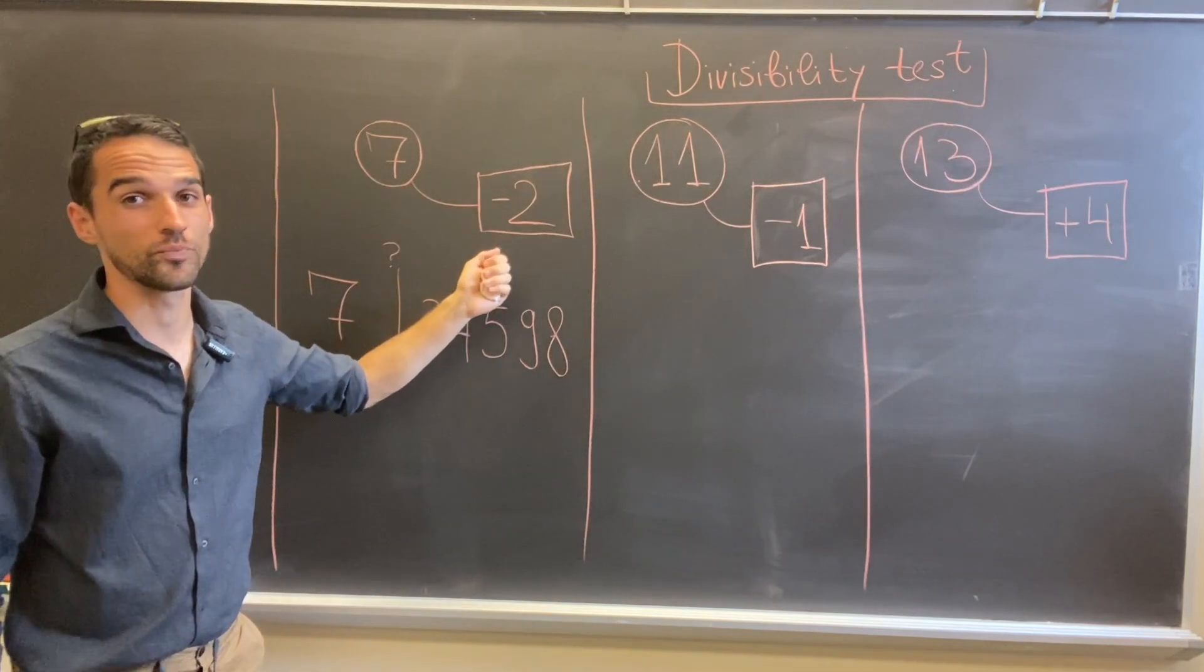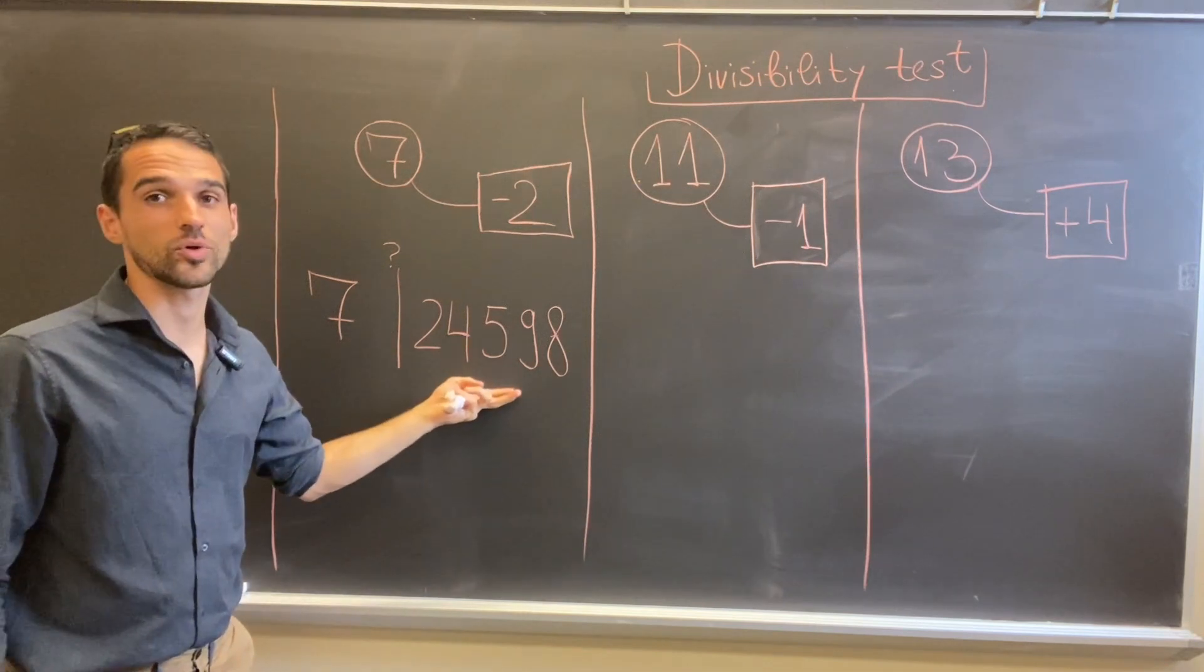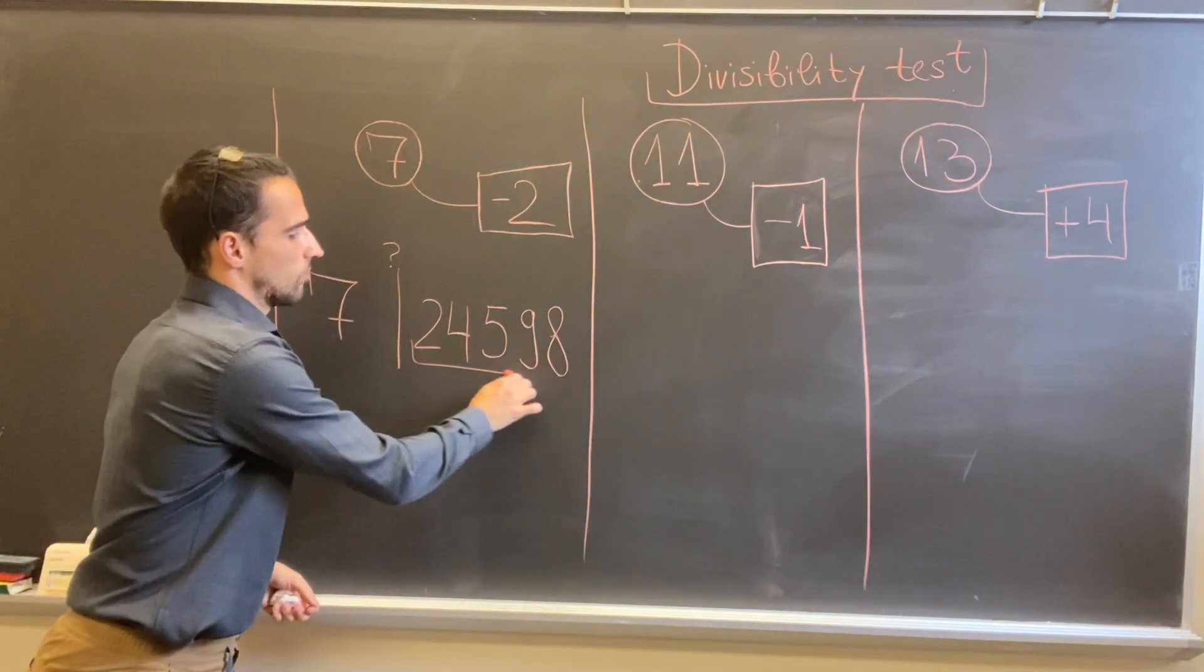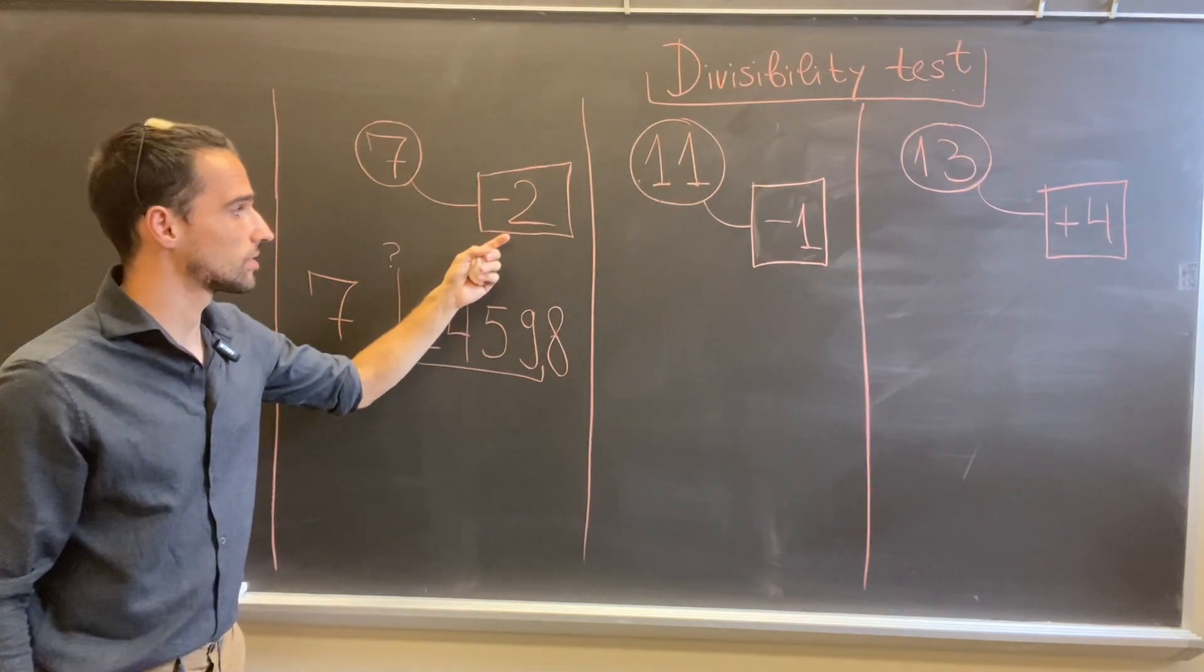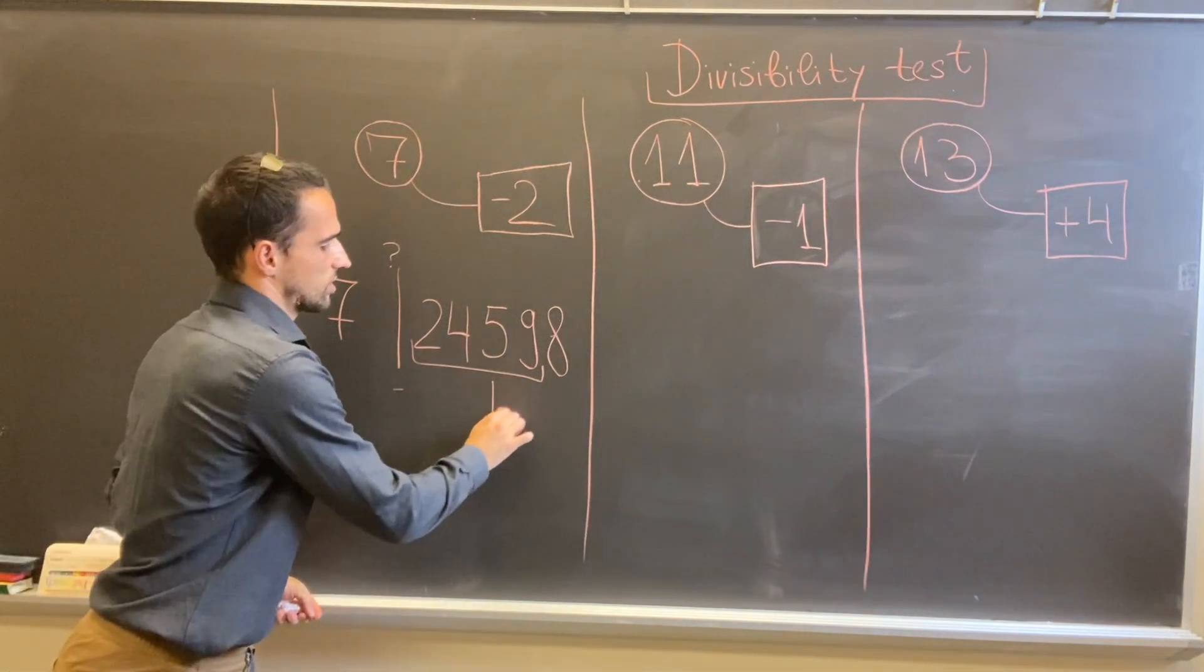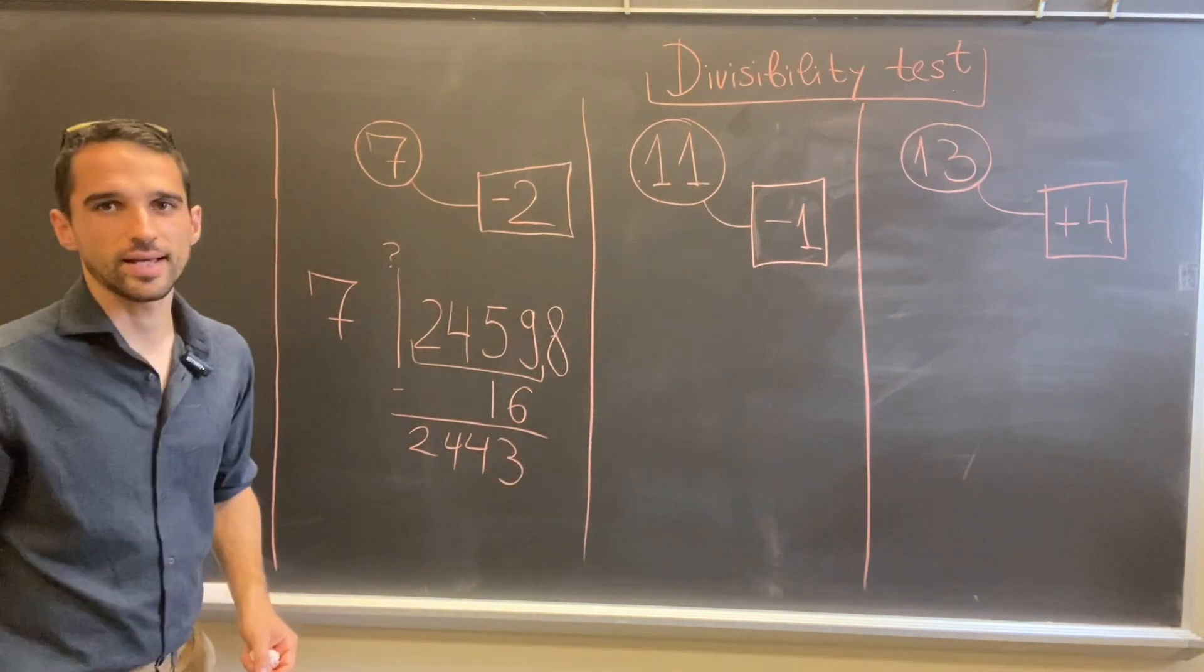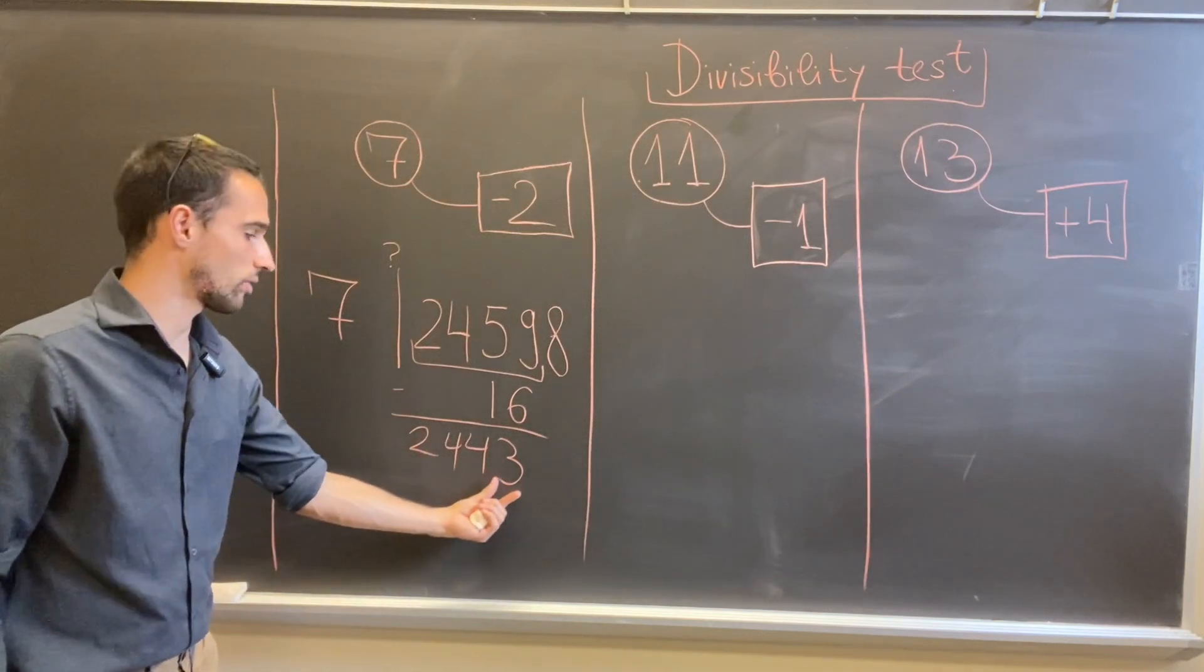For instance, for the number 7 the magical constant is negative 2. Imagine we want to test whether 7 divides this number over here: 24598. What we do is take the number without its last digit and subtract twice this digit, so we should subtract 16 to get 2443.